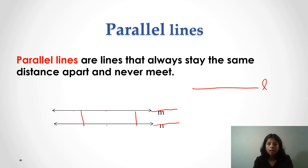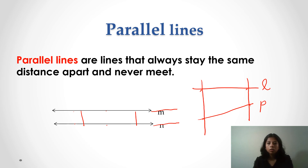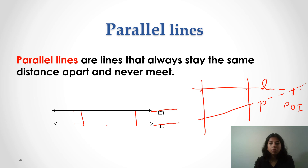Suppose there are two lines L and C. The perpendicular distance between the two lines is not the same at different points — this distance is not equal to that distance. So if we extend these lines, they meet at a point called the point of intersection. Since they meet when extended, they are not parallel lines, because parallel lines do not intersect.